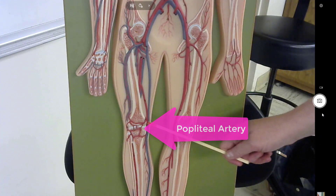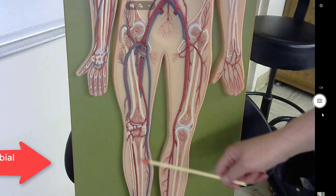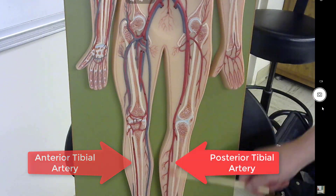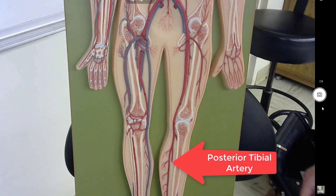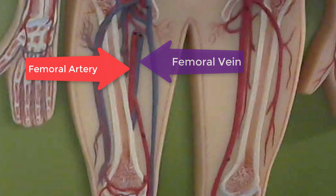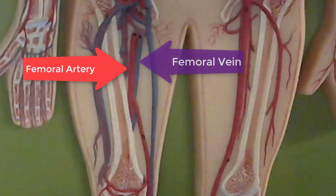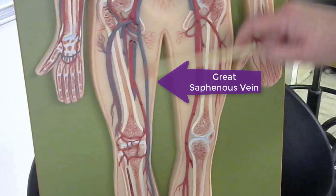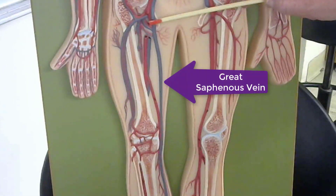This is the popliteal artery. Then we have the anterior tibial artery and the posterior tibial artery. We can see the femoral artery and the femoral vein right here side by side, and we have the great saphenous vein, which is on the medial aspect of the leg.